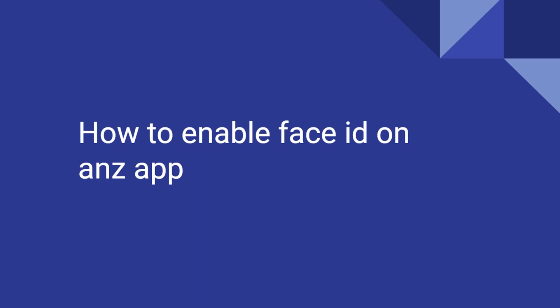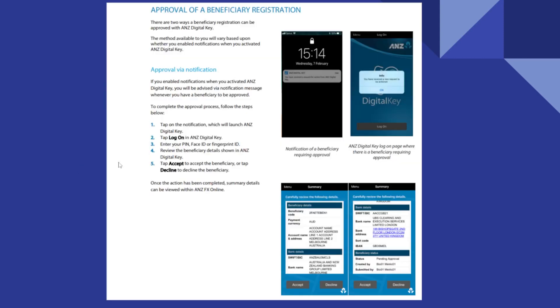Enabling Face ID on ANZ app is very easy. Today I'm going to show you how to do it. There are two ways a beneficiary registration can be approved with ANZ Digital Key. The method available to you will vary based on whether you enabled notifications when you activated ANZ Digital Key.